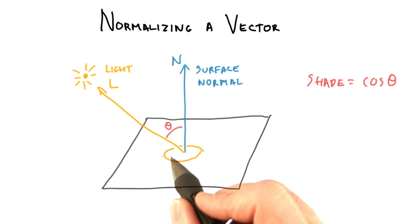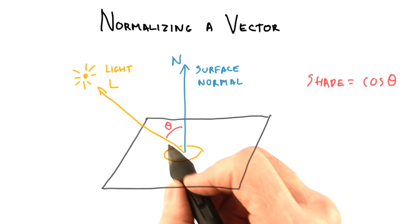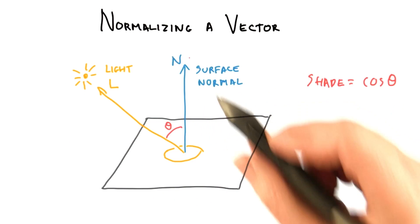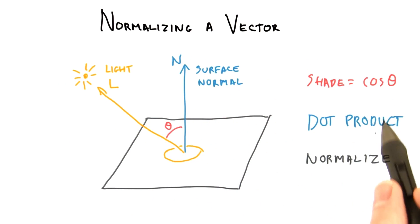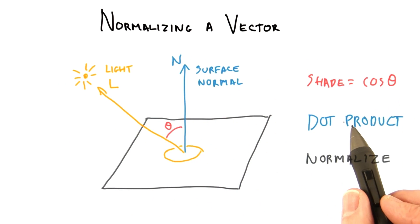To shade a diffuse surface, we need the cosine of the angle between the direction to the light and the surface's normal. We can perform a vector operation called a dot product to directly compute this cosine.